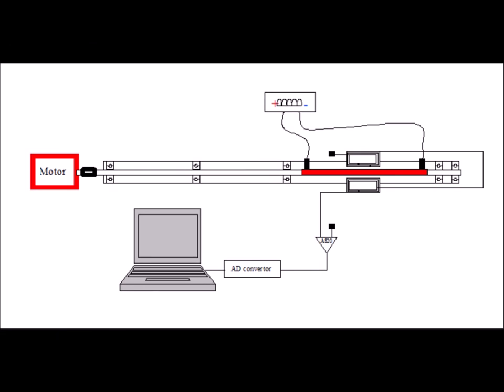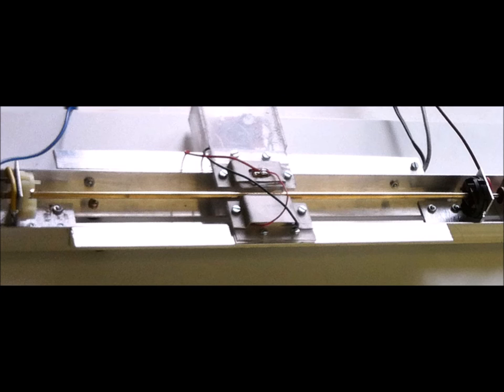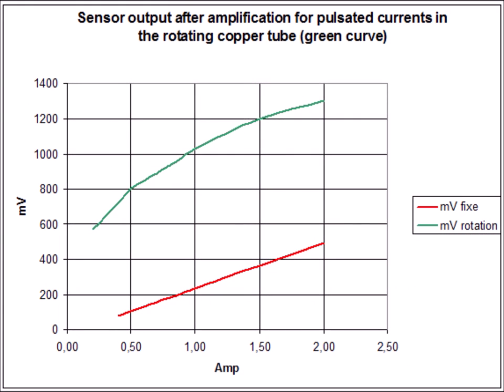An experiment analogous to Rowland's experiment, but with an electric current in a rotating conductor, provides indisputable confirmation of the angular momentum interpretation. The magnetic field of a 4 mm diameter tubular copper conductor, through which a pulsed current at 100 Hz from 0 to 2.5 amps flows, rotating at 260 revolutions per second, is measured by induction coils. The field in the rotating conductor is about three times greater than the field of an identical current passing through the stationary conductor.